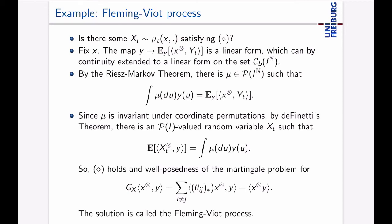So we need to ask ourselves can we find the μt here of the theorem and that works as follows. X is a starting point but that's fixed and you need to understand that this here Y maps to this expectation that's a linear function because Yt is just linear because it's just composition with another function and in fact this map here is linear and can be extended to linear form on the set I to the power of the natural numbers.